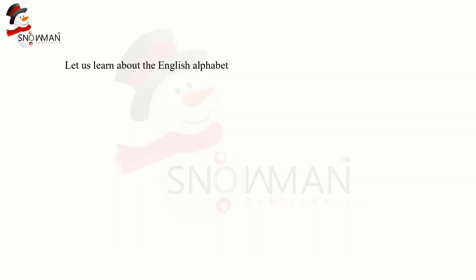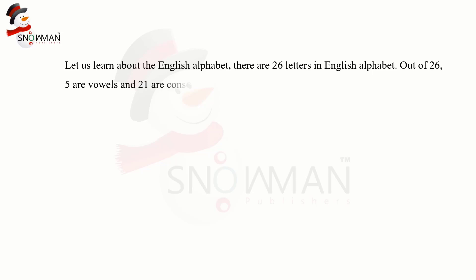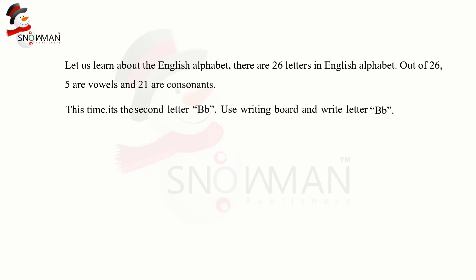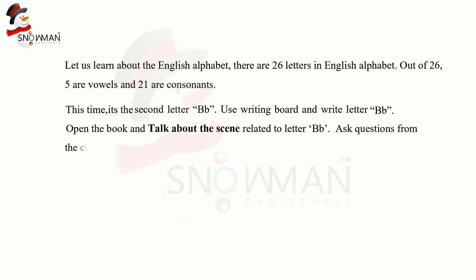Let us learn about the English alphabet. There are 26 letters in the English alphabet. Out of 26, five are vowels and 21 are consonants. This time it's the second letter, B. Use the writing board and write letter B. Open the book and talk about the scene related to the letter B.